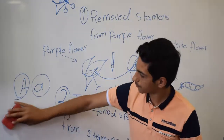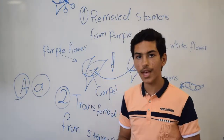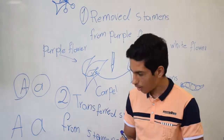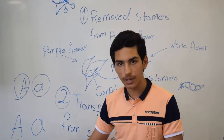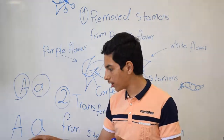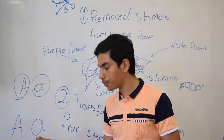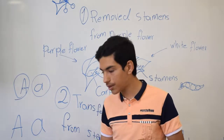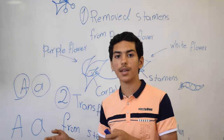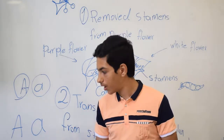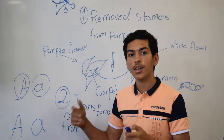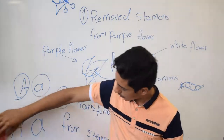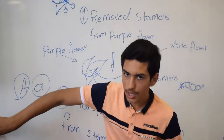We have a pea plant that has the genotype capital A and small a. Capital A is the dominant allele and small a is the recessive allele. Capital A does not have any problem, but small a has a few problems. Because the two alleles are different, we call this genotype a heterozygous genotype.